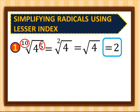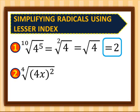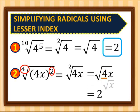Second example: 4th root of (4x) quantity squared. We divide the index by the exponent: 4 divided by 2 gives us index 2, then we copy 4x. We remove the index 2 since it's understood. Square root of 4 gives us 2, and we leave x inside the radical. So for number 2, we have 2 square root of x.